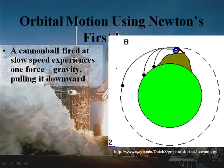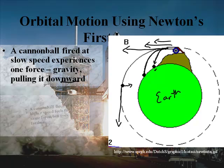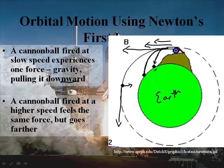Envision a cannonball as pictured here on the right. If you have a cannonball on top of a high mountain and you shoot it, that cannonball would fall to the ground. But because it was shot to the left a certain amount, it would travel a certain distance. Now if you shot it with a higher force — indicated by a longer arrow — it's going to travel farther. A cannonball fired at slow speed experiences gravity pulling it downward, which is what causes it to land on the ground.